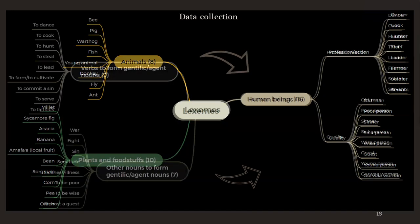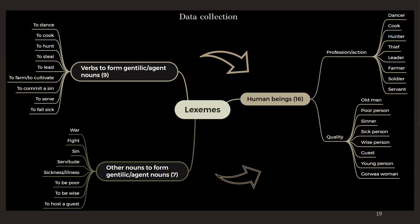Regarding human beings, I also had to ask additional questions to observe the origin of gentilic or agentive nouns. I asked verbs to form gentilic nouns — for instance, to know what happens with the word 'dancer,' I would also ask the verb 'to dance' to verify if it's the actual origin of this noun. I realized that for some nouns referring to human beings, another noun is the origin — something like war, fight, sin, servitude — so they were not derived from verbs directly.